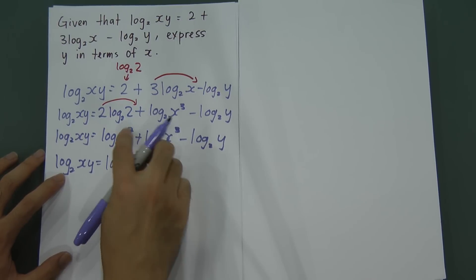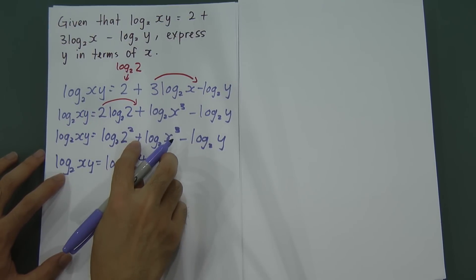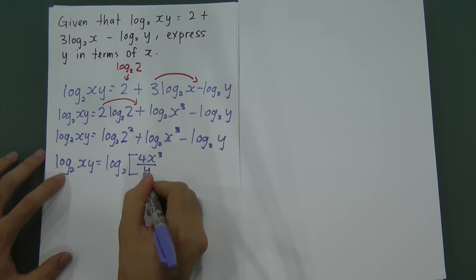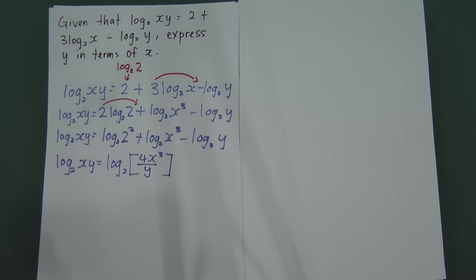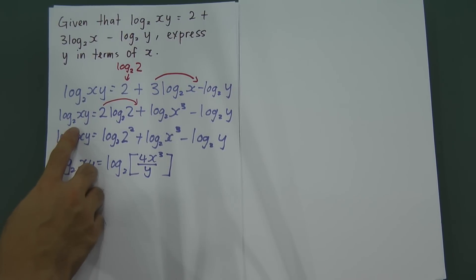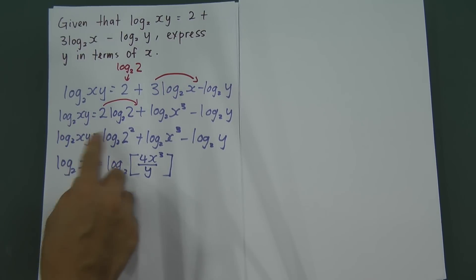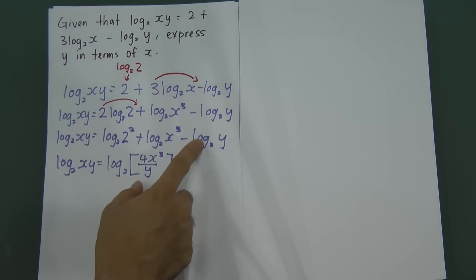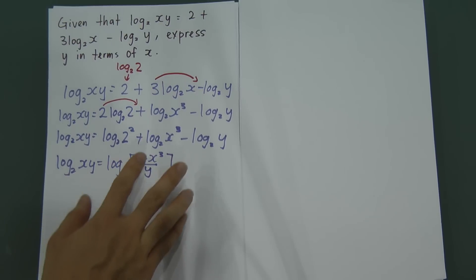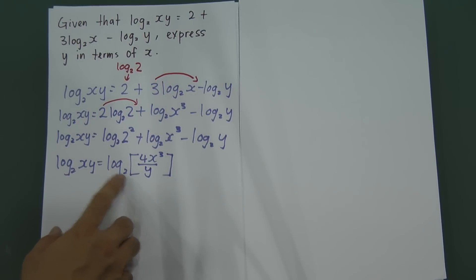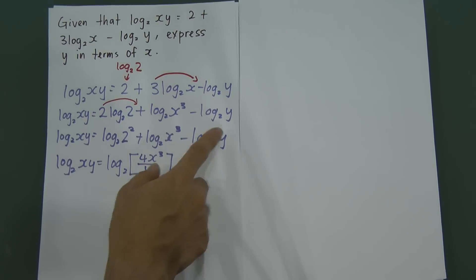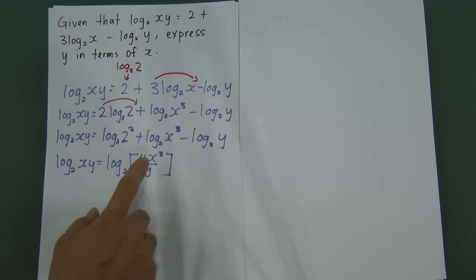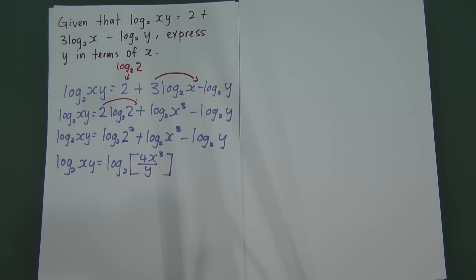After factorizing out log₂, you get: 2² is 4, so the argument becomes 4 × x³ ÷ y. Remember you cannot just cut all the log₂ terms directly without factorizing first. If you do that, you'd wrongly get 4 + x³ − y, which is incorrect. You can only simplify the log₂ after factorizing it out. The actual combined argument is 4 × x³ divided by y.